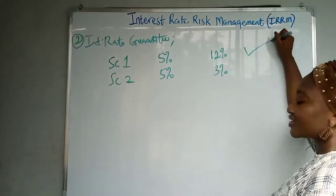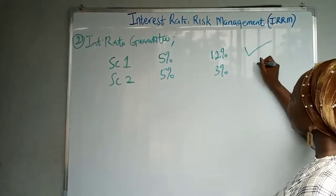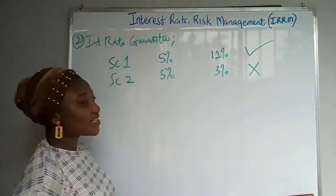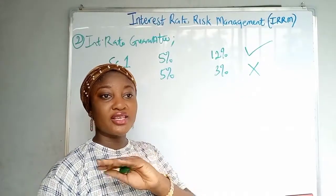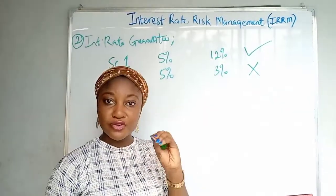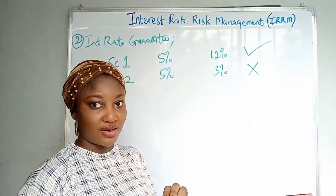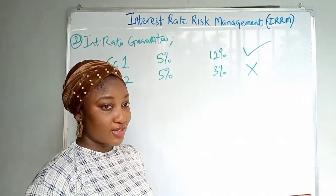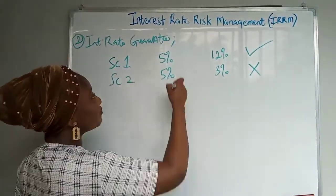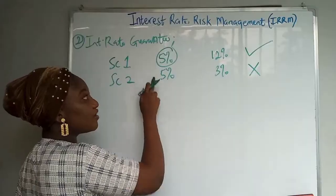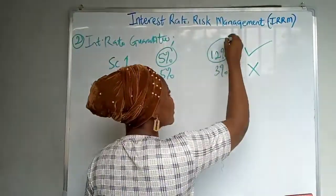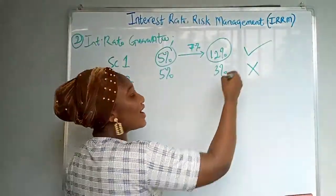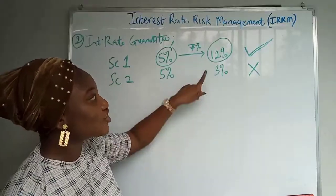In scenario one the customer is going to exercise the option, and in scenario two the customer will not — that's the rational thing to do. When calculating anything in interest rates or hedging, you always look from the point of view of the customer. Anytime the bank is losing, the customer is gaining, and vice versa. If the customer agrees to five percent but the rate rises to 12 percent, that seven percent difference is borne by the bank.